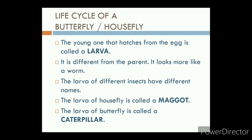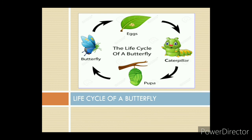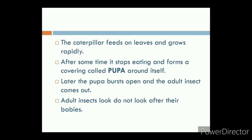Let us discuss the life cycle of a butterfly. The young one that hatches from the egg is called a larva. It is different from the parent and looks more like a worm. The larva of different insects have different names. The larva of a housefly is called a maggot; the larva of a butterfly is called a caterpillar. The four stages are: first, eggs; second, caterpillar; third, pupa; fourth, butterfly. The caterpillar feeds on leaves and grows rapidly. After some time, it stops eating and forms a covering called pupa around itself. Later, the pupa bursts open and the adult insect comes out. Adult insects do not look after their babies.